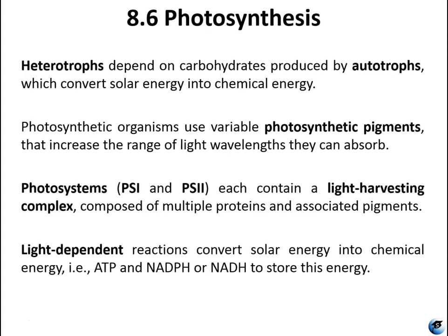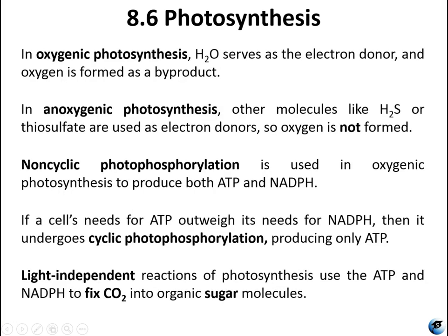Moving into photosynthesis, section 8.6. Heterotrophs need the carbohydrates produced by autotrophs. Autotrophs can use solar energy to produce chemical energy; heterotrophs cannot and depend on autotrophs. Autotrophs are generally photosynthetic organisms using different mixtures of photosynthetic pigments to increase the range of light wavelengths they can absorb. Photosystems PSI and PSII are light-harvesting complexes composed of proteins and different photosynthetic pigments. The light-dependent reactions convert solar energy into ATP, NADPH, and NADH, which can store energy from light.